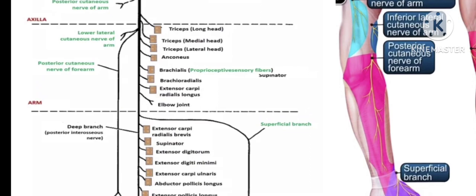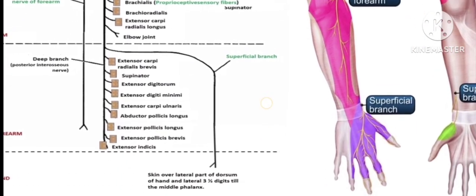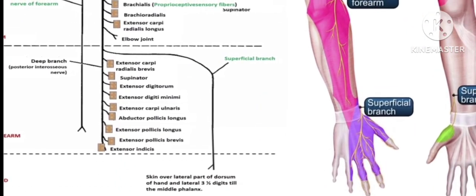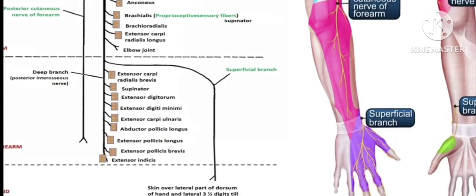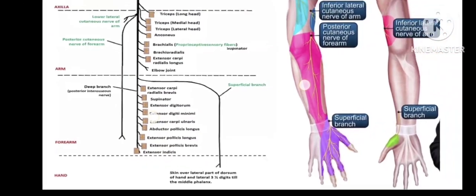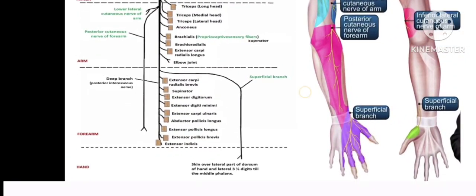The four sensory branches are: first, the posterior cutaneous nerve of the arm; second, the lower lateral cutaneous nerve of the arm; third, the posterior cutaneous nerve of the forearm; and fourth, the superficial branch of the radial nerve, which supplies the skin over the lateral part of the dorsum of the hand and the lateral three and a half digits, except the nail beds.